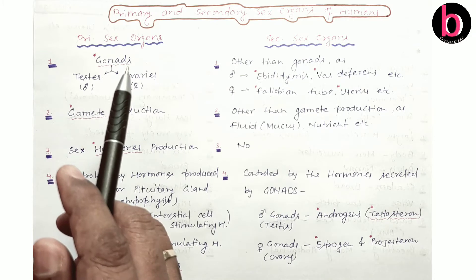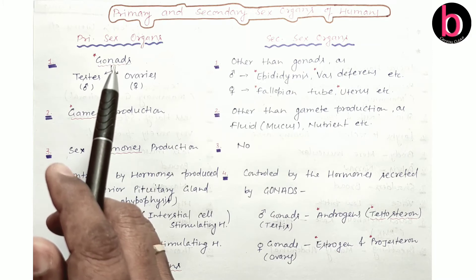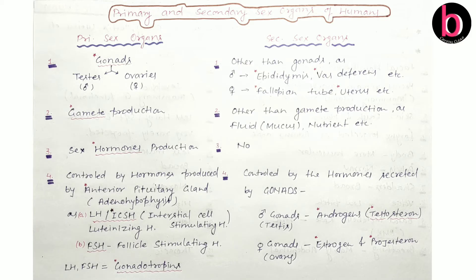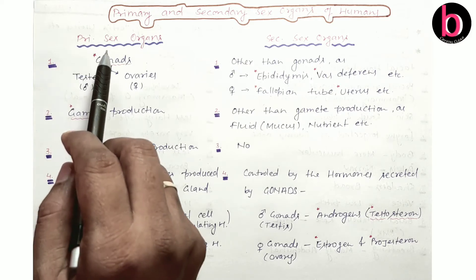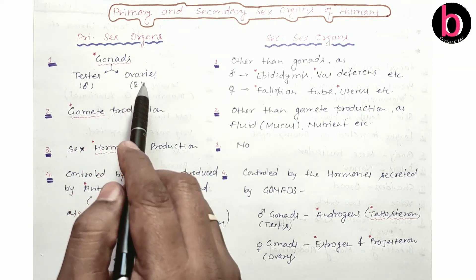The primary sex organ for human beings is known as gonads. In the case of humans, there are two individuals — male and female — and this is related to the topic of sexual dimorphism, which we already discussed. Sexual dimorphism is a phenomenon in which two individuals of the same species can be differentiated not only on the basis of their sexes, but also on the basis of other morphological characters. So, the gonads are: testes for male and ovaries for female.